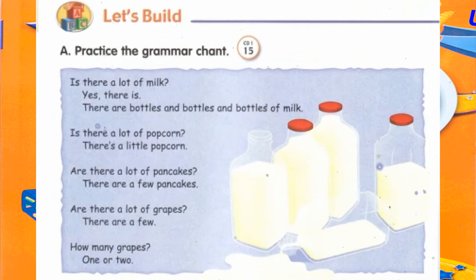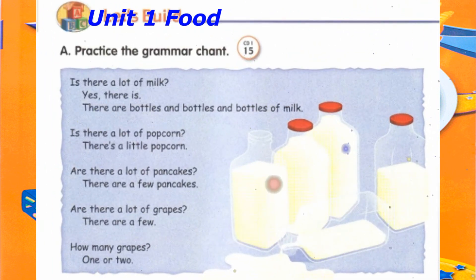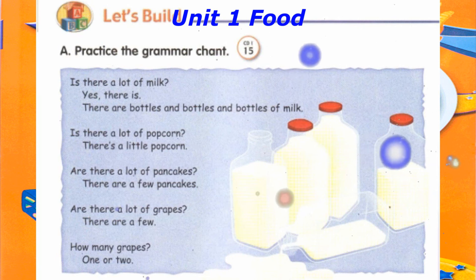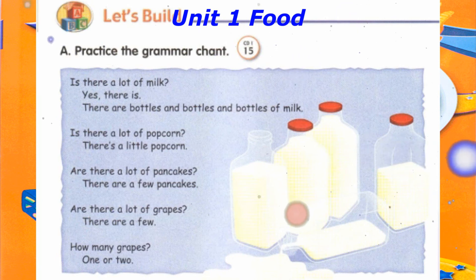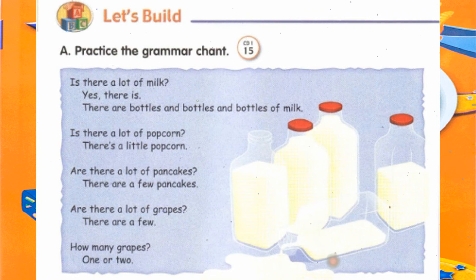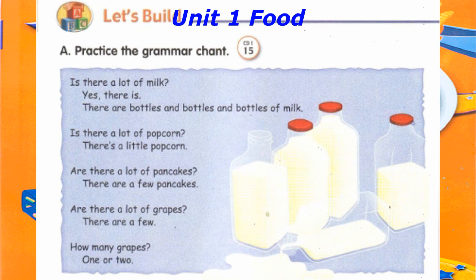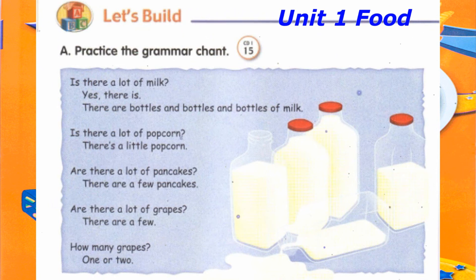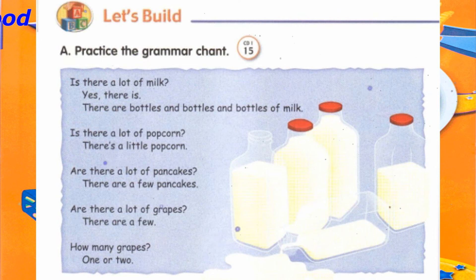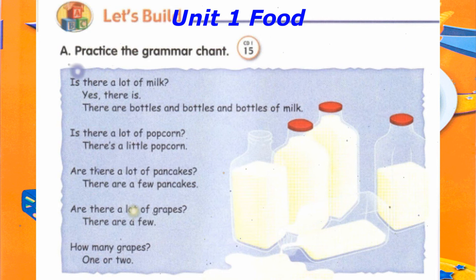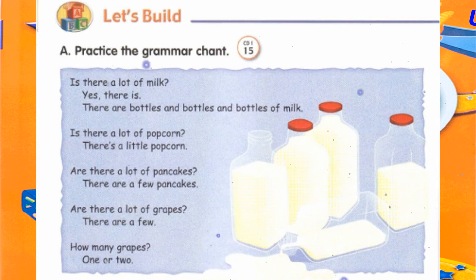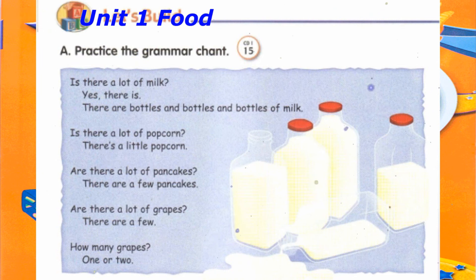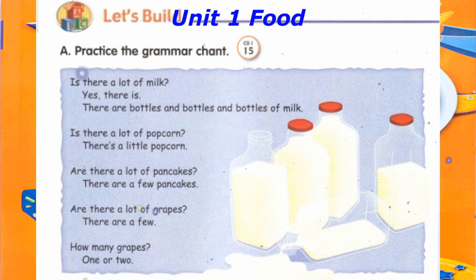Track 15. Let's build. A. Practice the grammar chant. Is there a lot of milk? Yes, there is. There are bottles and bottles and bottles of milk. Is there a lot of popcorn? There's a little popcorn. Are there a lot of pancakes? There are a few pancakes. Are there a lot of grapes? There are a few. How many grapes? One or two.